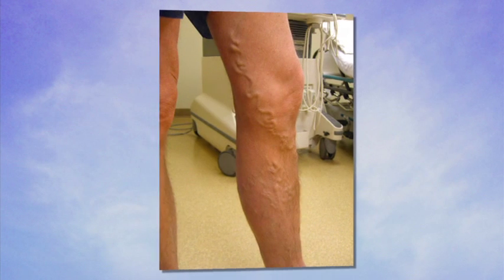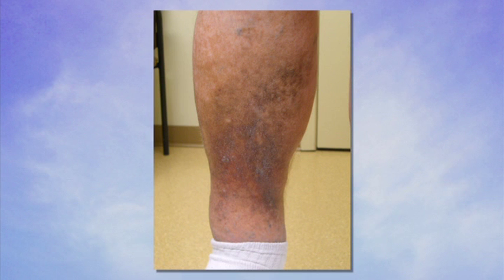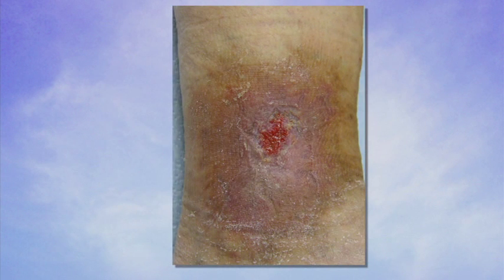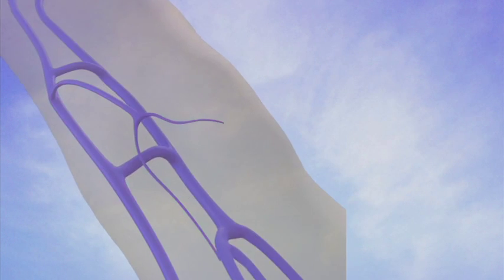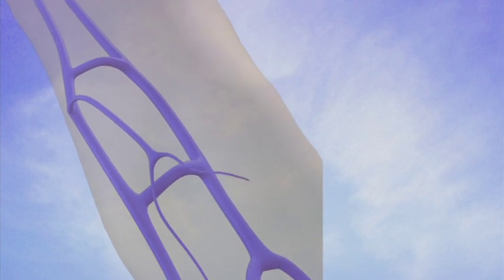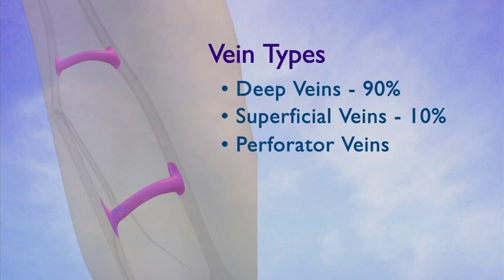Malfunctioning superficial veins often cause pain, heaviness, skin changes, and even skin ulcerations. Connecting the deep and the superficial veins are a third type of vein, the perforator veins. Incompetent perforators can also cause significant complications, including skin ulcerations.